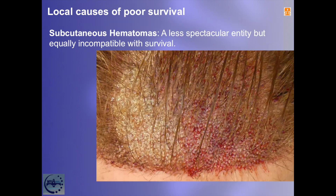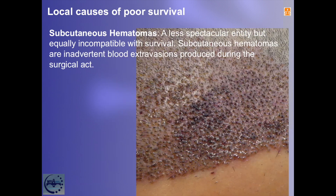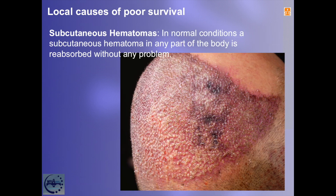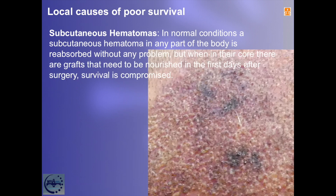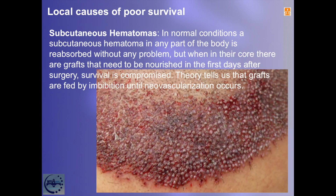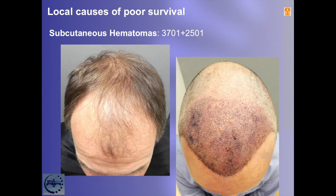We now turn to the second complication: subcutaneous hematomas — a less spectacular entity but equally incompatible with survival. Subcutaneous hematomas are inadvertent blood extravasations produced during the surgical act. In normal conditions a subcutaneous hematoma anywhere in the body is reabsorbed without any problem, but when grafts that need to be nourished are in their core in the first days after surgery, survival is compromised. Theory tells us that grafts are fed by imbibition until neovascularization occurs. If in those first days the follicle is immersed in a subcutaneous clot, the exchange through the membranes is non-existent and survival is compromised.